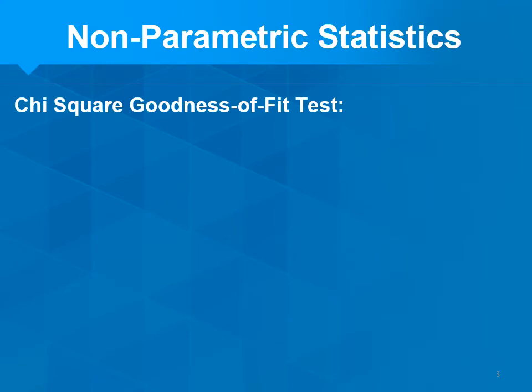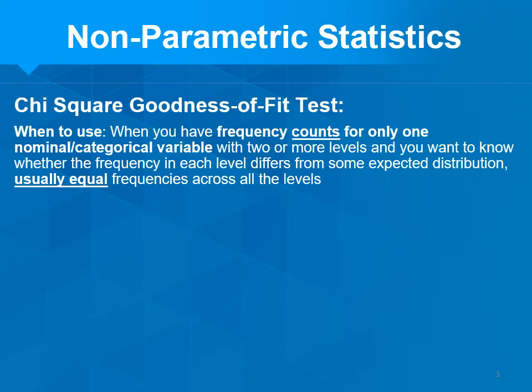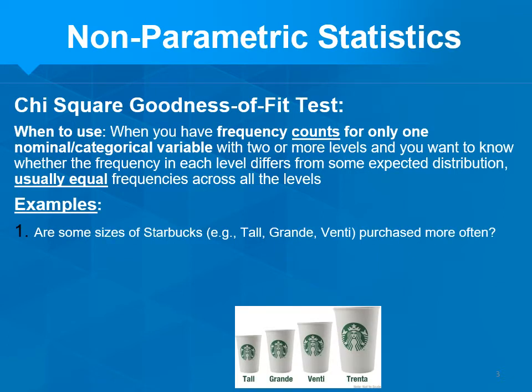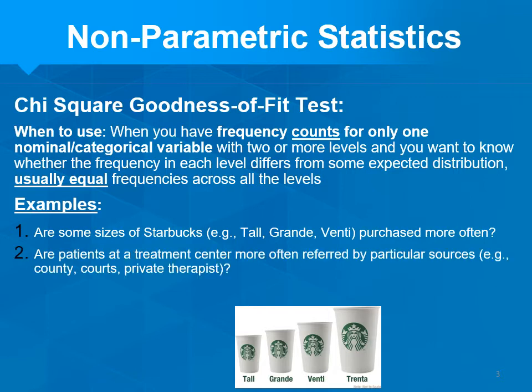Let's talk about the chi-square goodness of fit test. Use it when you have frequency counts for only one nominal or categorical variable with two or more levels, and you want to know whether the frequency in each level differs from some expected distribution — which usually means equal frequencies across all levels. Examples: Are some sizes of Starbucks — tall, grande, venti — purchased more often? Are patients at a treatment center more often referred by a particular source: the county, the courts, or private therapists?